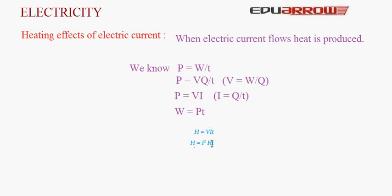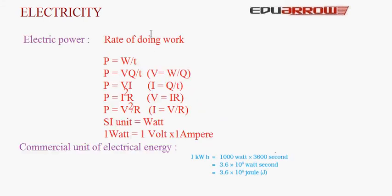Now let us understand what is electric power. The rate of doing work is known as power: P = W/T, where W is work done and T is the time taken. Since V = W/Q, we get W = VQ. Substituting, P = VQ/T = VI. Also, P = I²R by putting V = IR, and P = V²/R by putting I = V/R.